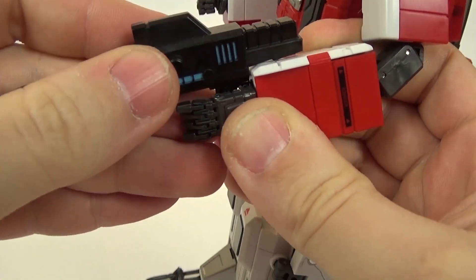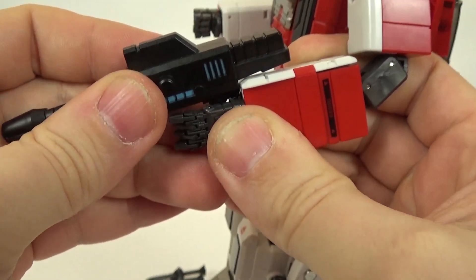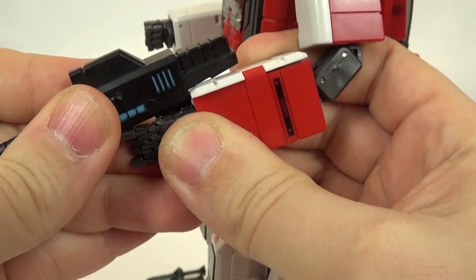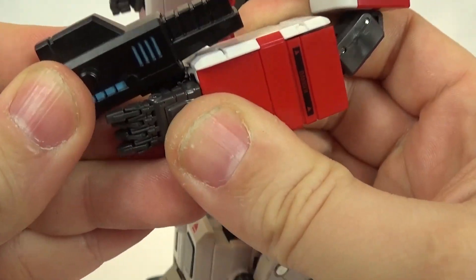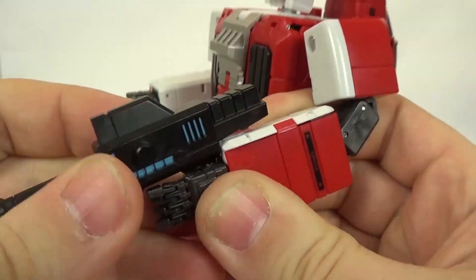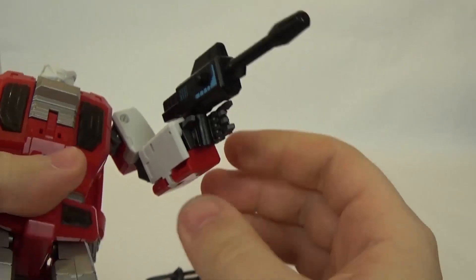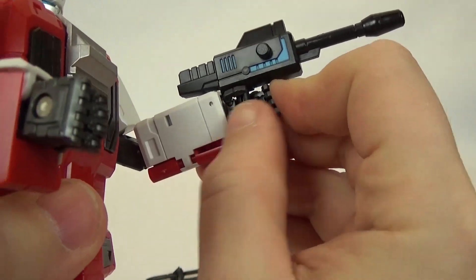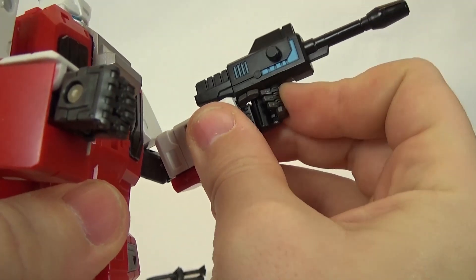And, then, of course, he can hold his gun. There's just a slot in the gun that you're supposed to tab onto his hand. And, once you get that in, he can hold his gun.